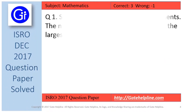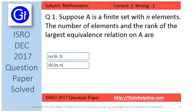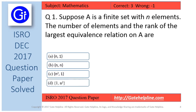So friends, question number 1 is: suppose A is a finite set with n elements, the number of elements and the rank of the largest equivalence relation on A are — with options A, B, C and D.